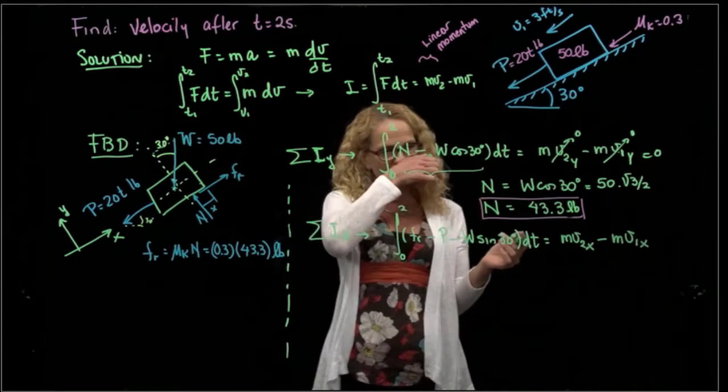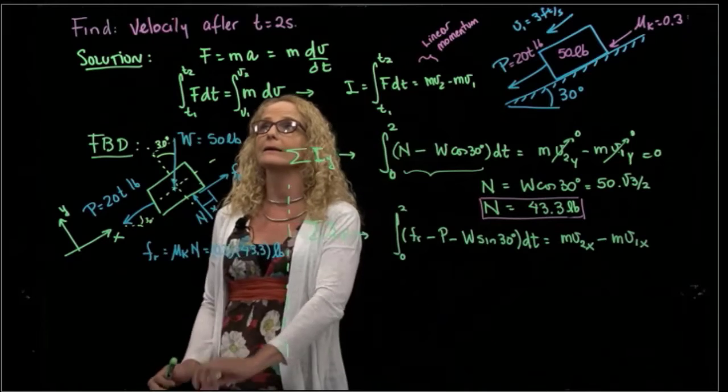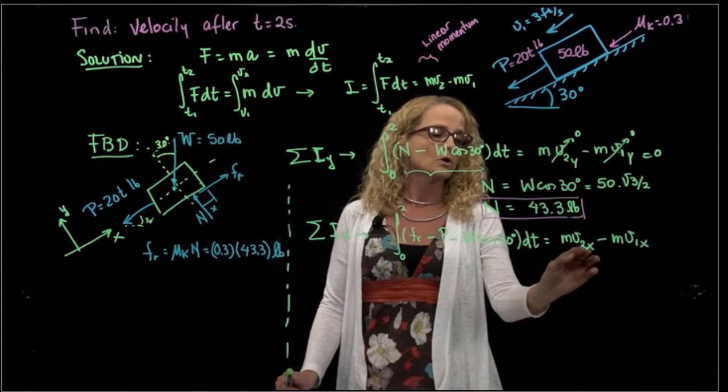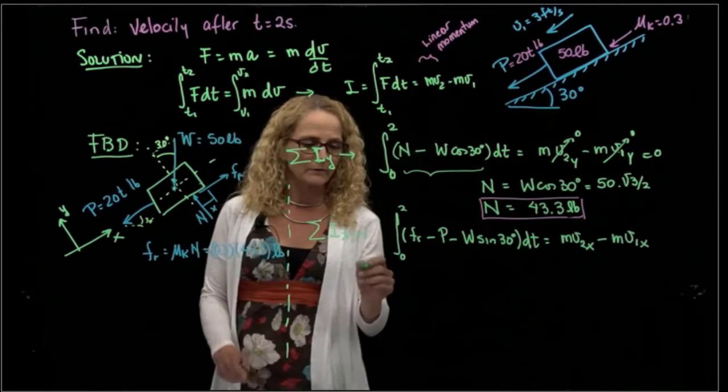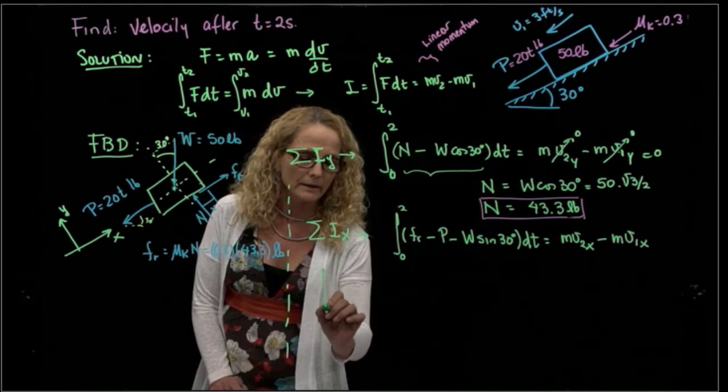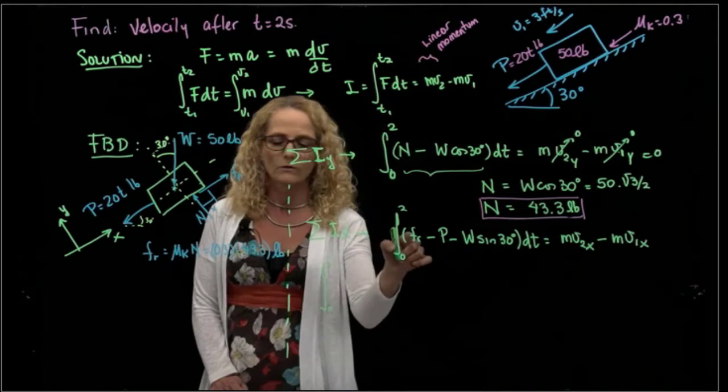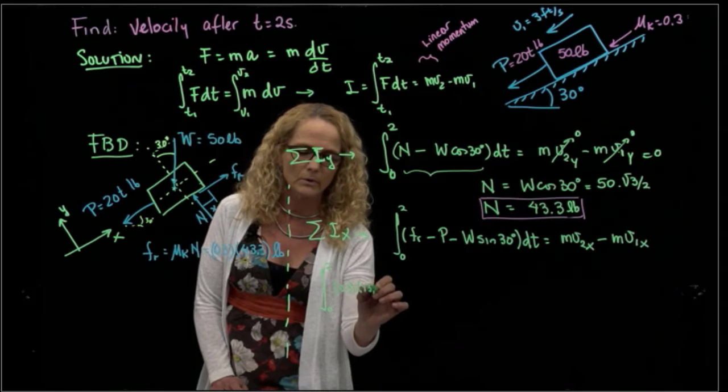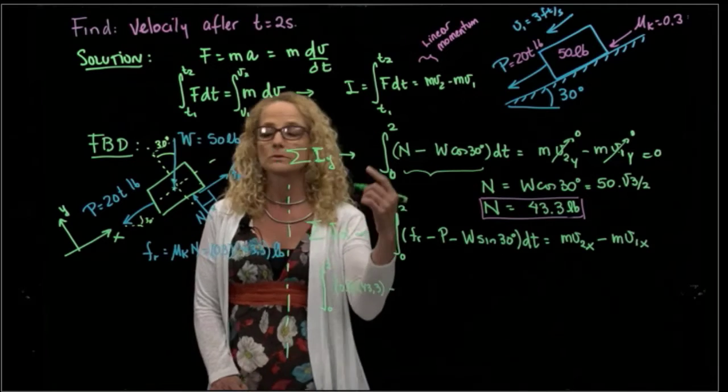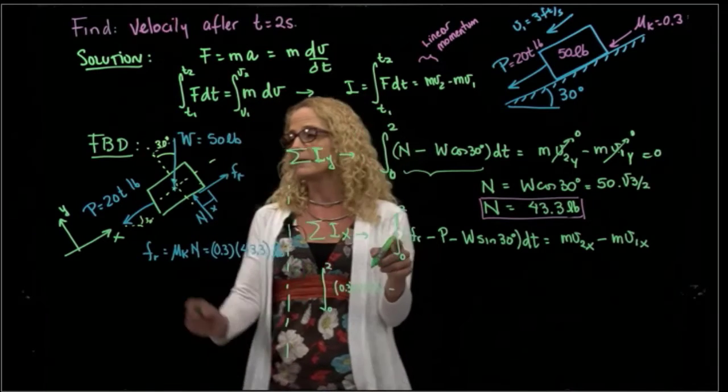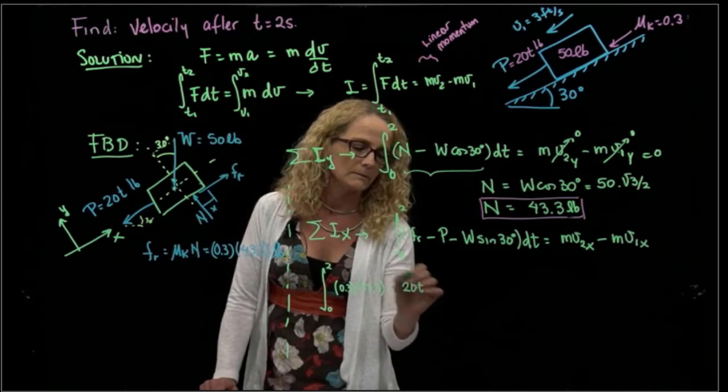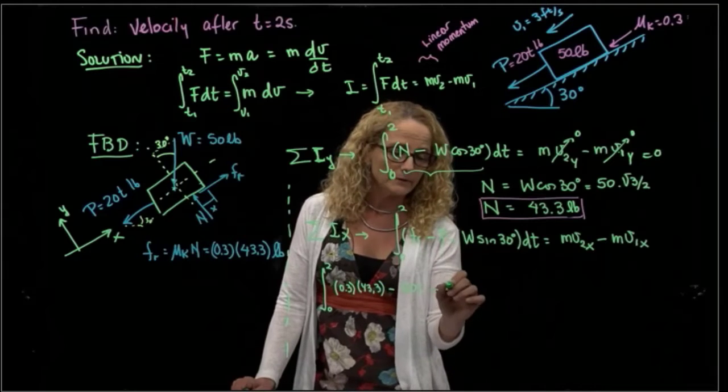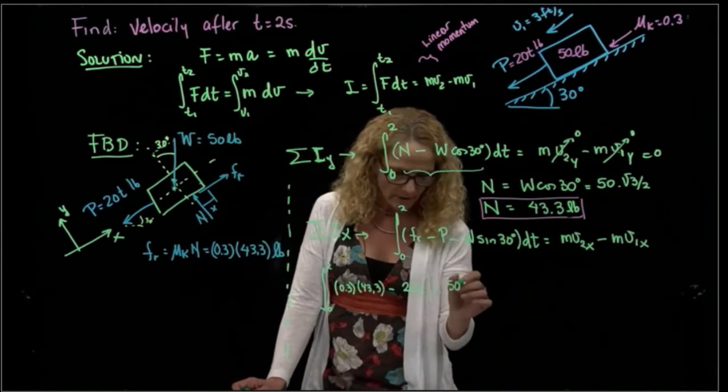And I have most of these values. So what I want to find is the velocity after 2 seconds, so it's that velocity. So we will solve for that velocity, and then we have that will be the integral from 0 to 2 of my friction force, I already said that is 0.3 times 43.3, minus P, P is 20t, minus the weight, the weight is 50, sine of 30, you know that is 1 half.